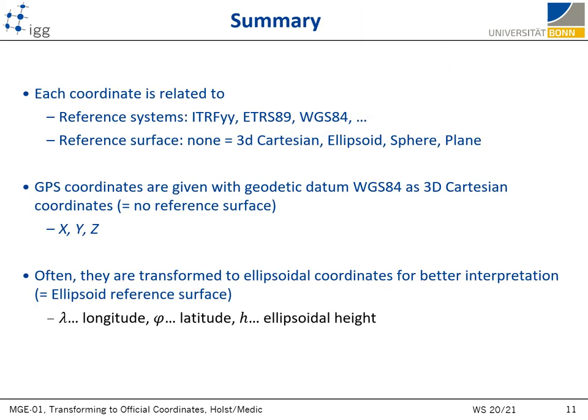To summarize, each global coordinate is related to one of the reference systems and eventually a reference surface. For example, GPS coordinates are calculated and given as 3D Cartesian coordinates in the WGS-84 system without considering any reference surface; however, they are often transformed into ellipsoidal coordinates for better interpretation on the Earth surface.